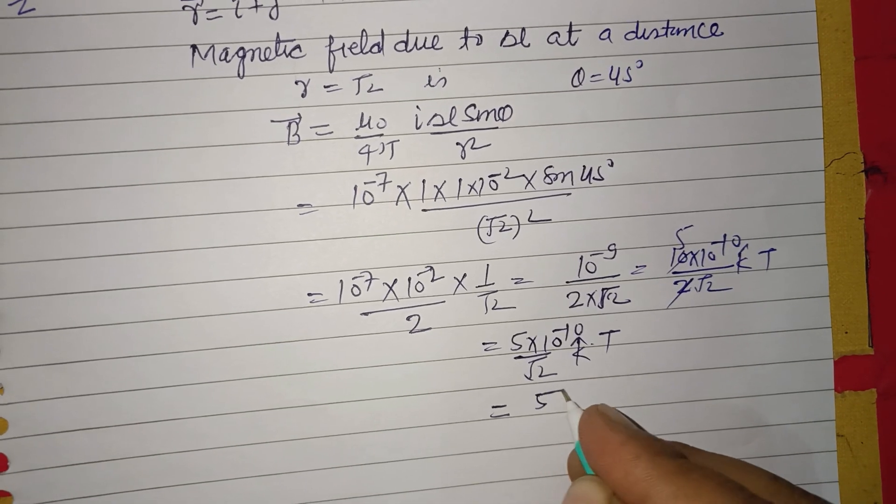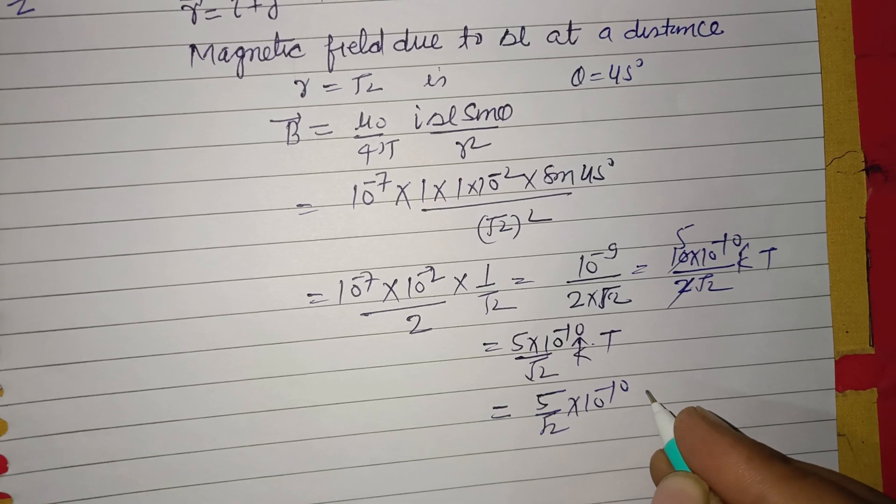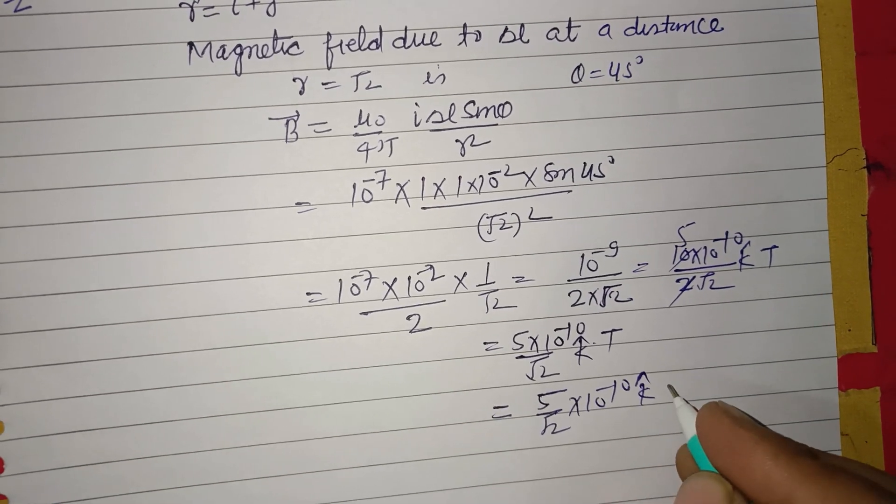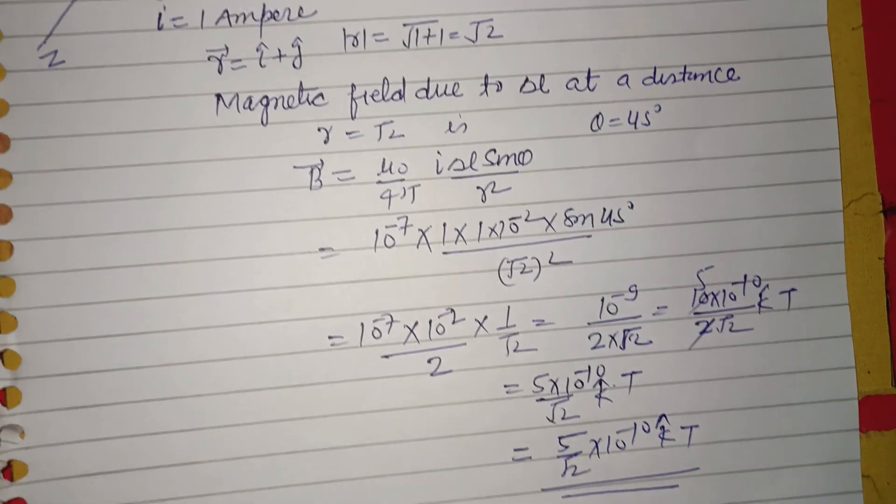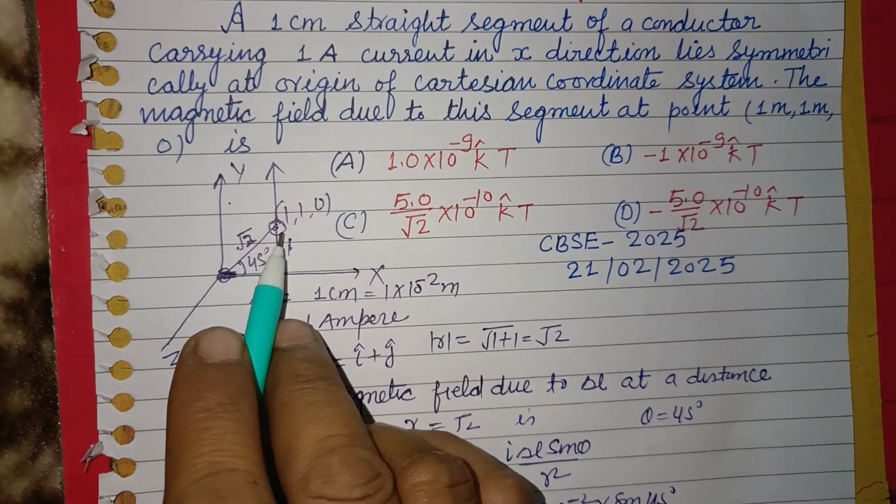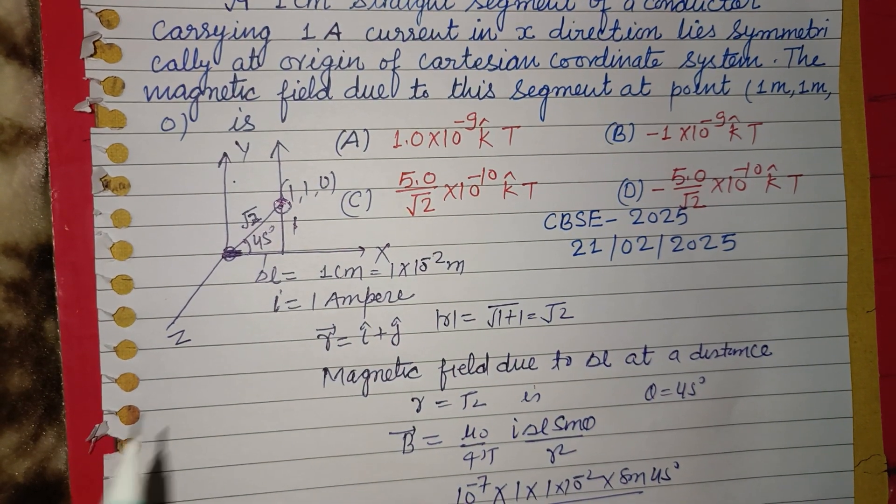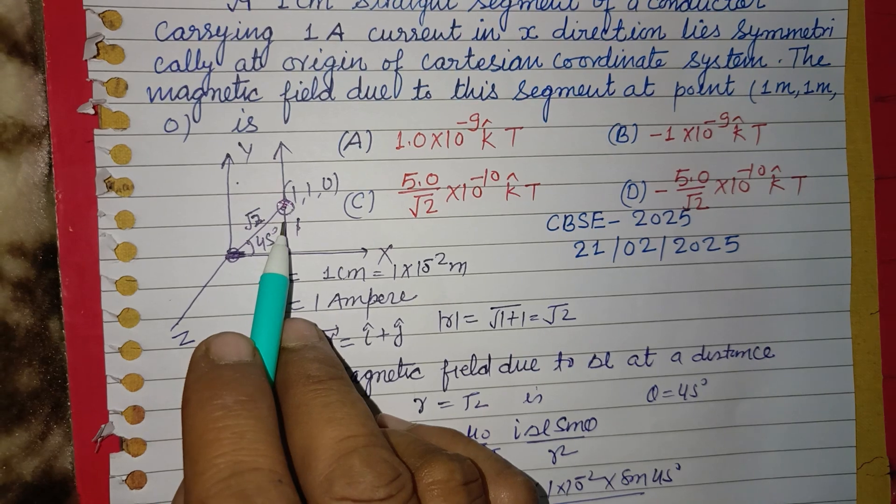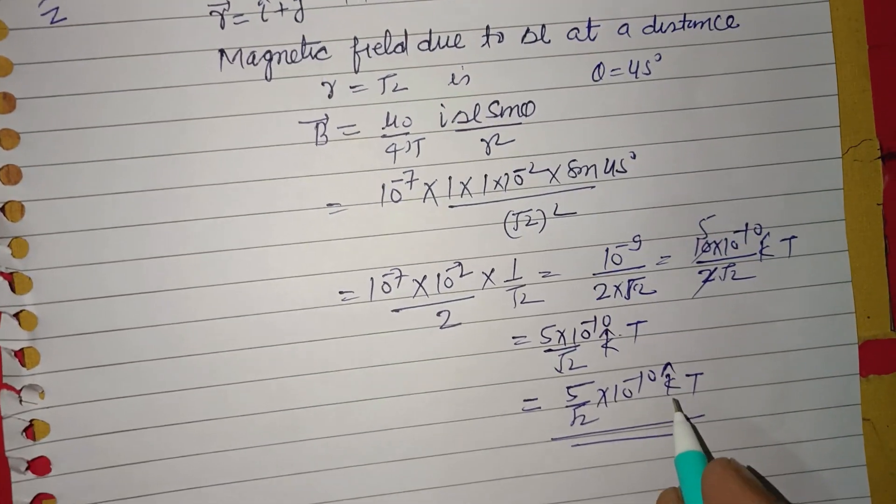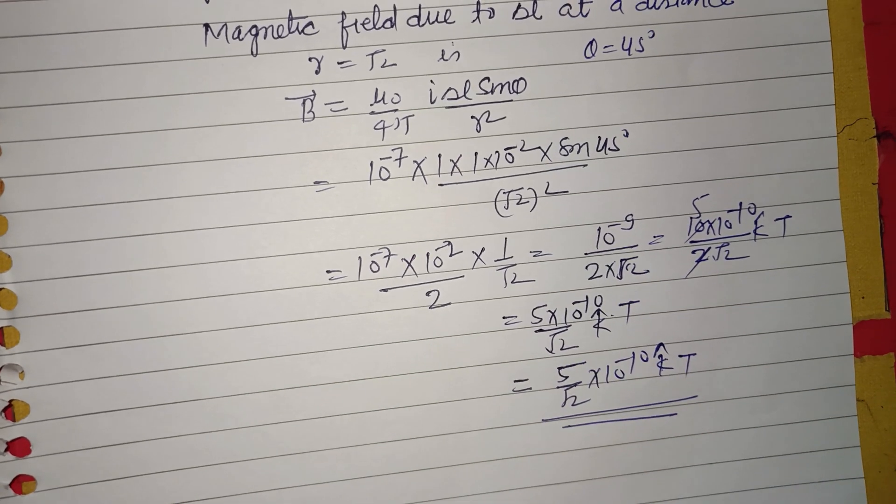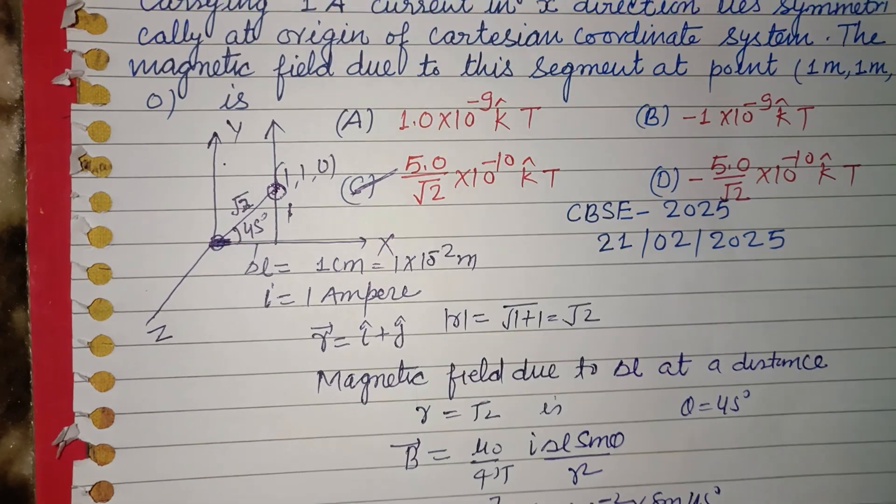So 5/√2 × 10⁻¹⁰ k cap Tesla. This field direction is in upper direction, which is z axis or k cap vector. The correct answer of this question is C.